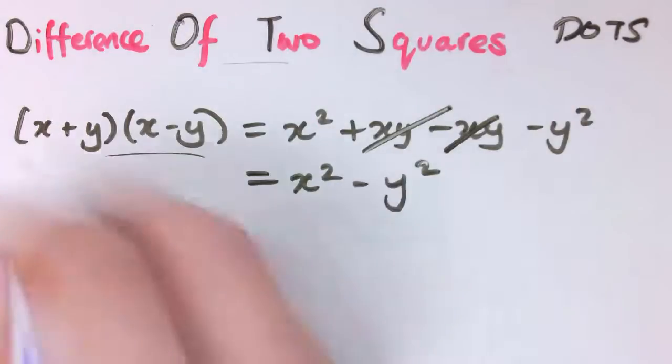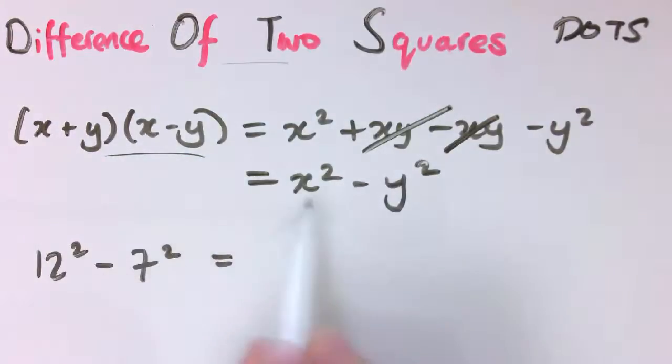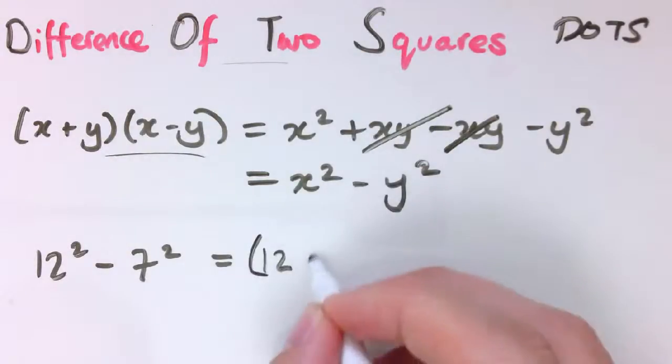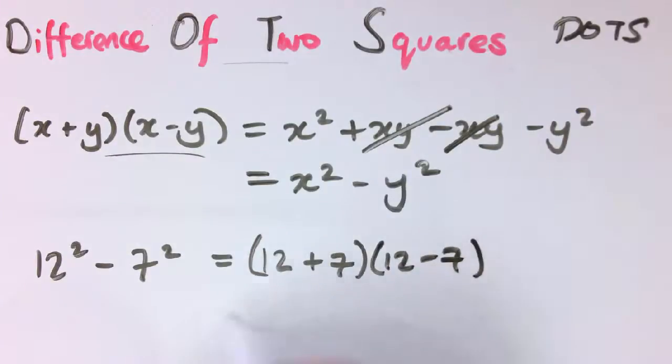So if I wanted to do 12 squared minus 7 squared, say, I could say by the difference of two squares, we've got x is 12 and y is 7. So that's 12 plus 7 times 12 minus 7. So that's 19 times 5, which is 5 less than 20 times 5. So that's 95. And of course, we could work this out numerically as well.